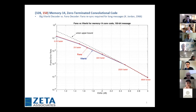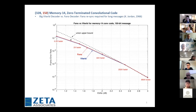I thought this was a great first slide. It's for a memory-14 zero-terminated convolutional code with a message size of 150. I'm plotting the frame error rate for both Viterbi and Fano against the standard signal-to-noise ratio Eb/N0. You can see the performance is essentially identical for both. I've also included the union upper bound to show they're both very tight with a maximum likelihood decoder.